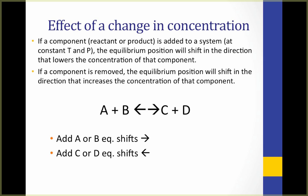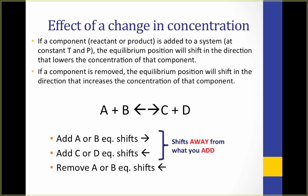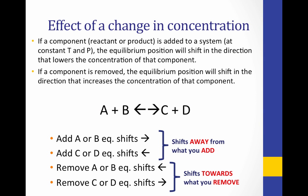On the other hand, if we add C and D, our equilibrium position will shift to use up some of that extra C and D, creating more A and B than we had before. In each of these cases, the equilibrium position shifts away from what you add. If we remove some A and B, the equilibrium position will shift to replace some of what we've removed, using up C and D to make more A and B. Likewise, if we remove some C and D, our equilibrium position will shift towards C and D to replace what we've removed. In summary, it shifts away from what you add and towards what you remove.